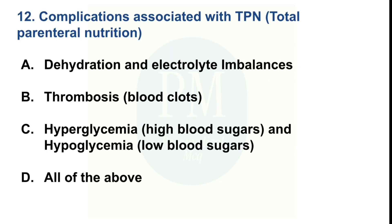Complications associated with TPN (total parenteral nutrition): Option A: dehydration and electrolyte imbalance. Option B: thrombosis and blood clots. Option C: hyperglycemia (high blood sugar) and hypoglycemia (low blood sugar). Option D: all of the above. The correct option is Option D — all of the above.